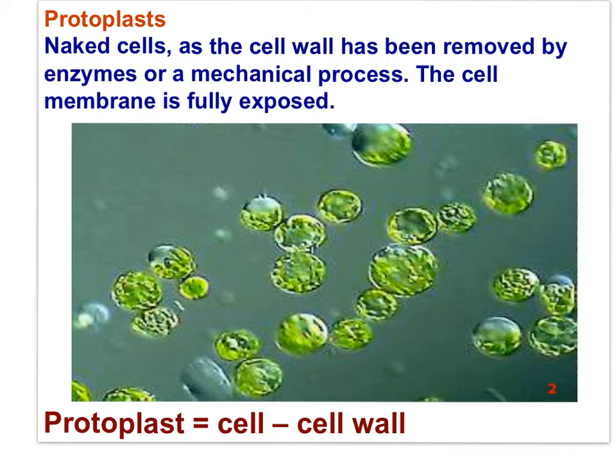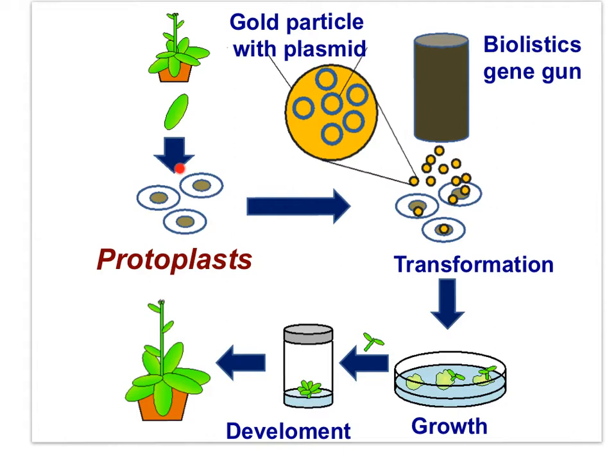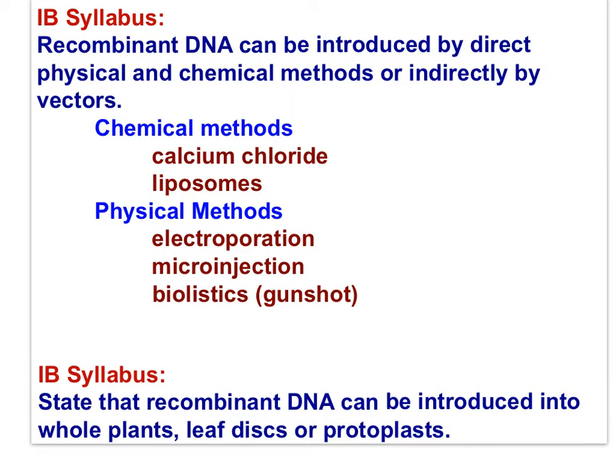Protoplasts are typically made from leaf material because there are large numbers of relatively uniform cells in leaves. One would sterilize the leaves, remove the epidermal layer, incubate the leaf in an enzyme solution, then separate the protoplasts by filtration. Protoplasts can be used as the target of genes shot into the cell by biolistics — the gene gun. Gold particles with plasmids are fired into the protoplasts to transform the cells into transgenic species.